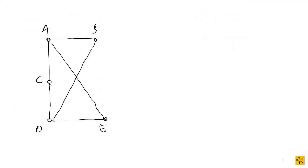Let's look at another example with vertices a, b, c, d, e. Identifying non-adjacent pairs: a is not adjacent to d; b is not adjacent to c; b is not adjacent to e; c is not adjacent to e. d is only non-adjacent to a, which we've already covered. e is not adjacent to c and not adjacent to b, both already covered. So the non-adjacent pairs to investigate are: a-d, b-c, b-e, and c-e.